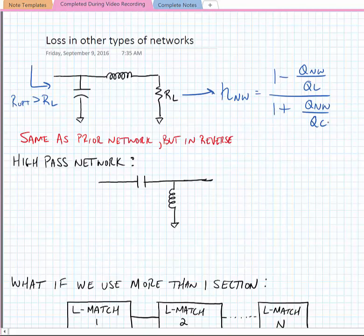Again, noting that Q_L is typically much lower than Q_C, the approximate efficiency for this network would be Q_L minus Q_network divided by Q_L.